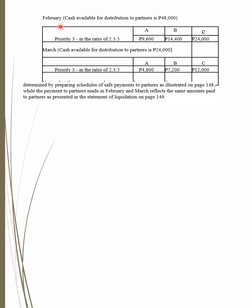For February, available cash is $48,000. We are now at Priority 3, since Priority 1 and 2 have been consumed. The $48,000 is distributed using the PNL ratio. The remaining $24,000 from March is also handled under Priority 3. That concludes the discussion. You just need to follow the procedure for the cash priority program, the schedule of safe payments, and the statement of liquidation under installment liquidation of a partnership.